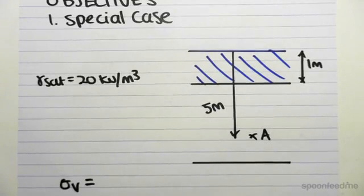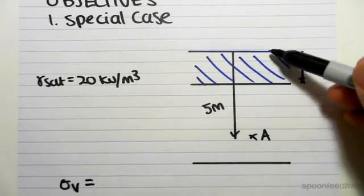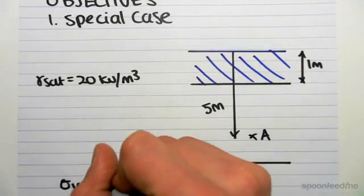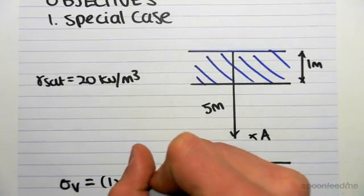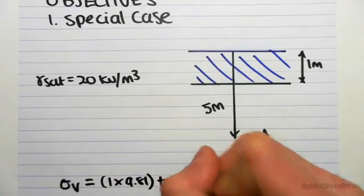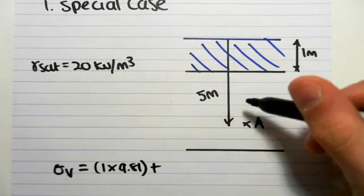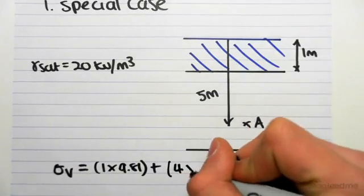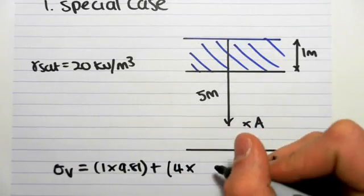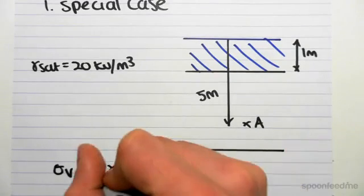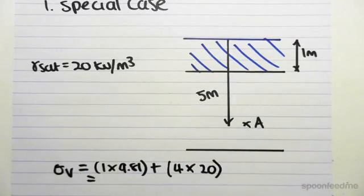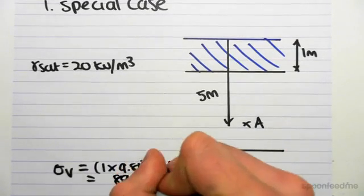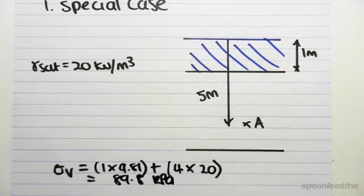The effective stress will be the weight of the water, so it will be 1 times gamma w, which is 9.81, plus 4 meters (because it's 5 minus 1), plus 4 meters of gamma sat, which is 20 kilonewtons per meter cubed. So if we work this out, it's going to be 9.81 plus 4 times 20, we get 89.8 kPa.